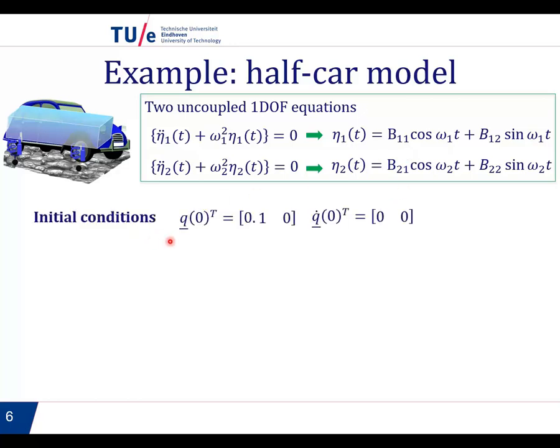So let us take initial conditions. Q at time 0 is 0.1, 0, and Q dot is 0, 0. What does this initial condition mean? It means we are giving point P here an initial displacement 0.1 meters. So we lift it to 0.1 meters at time 0, and then we let loose. And the question is, what will be the response of the system? Or in other words, what are these constants?